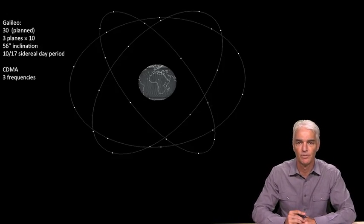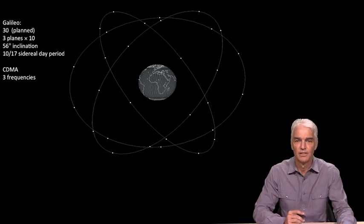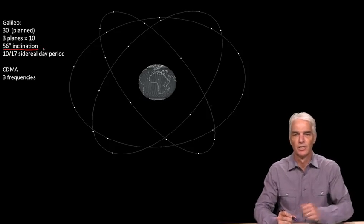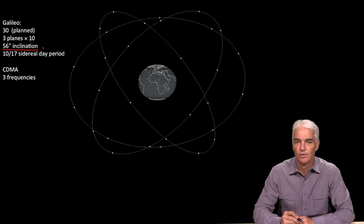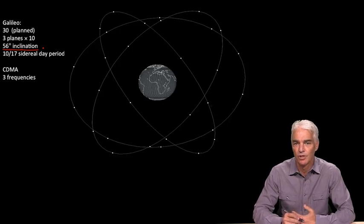This is the set of orbits planned for Galileo. At the moment, there are only three operational Galileo satellites, but the plan is to have 30 with three orbital planes and 10 in each orbital plane, very similar to GLONASS, which has three orbital planes with eight satellites in each. The inclination angle is 56 degrees, and you'll see the pattern emerging - GPS with 55 degrees, GLONASS with 66, and Galileo with 56. The inclination angle is chosen to give good coverage over the region that owns and operates the satellites.